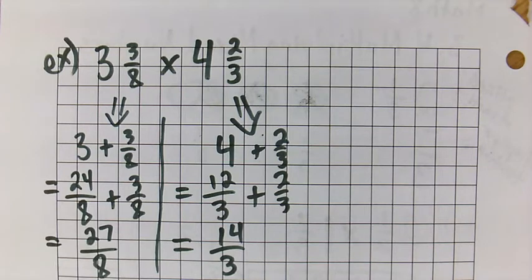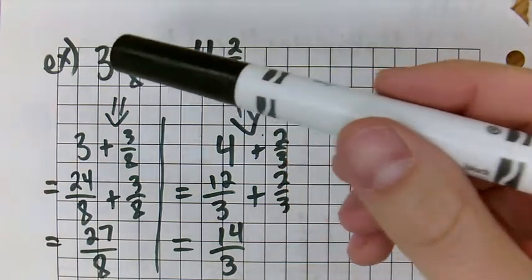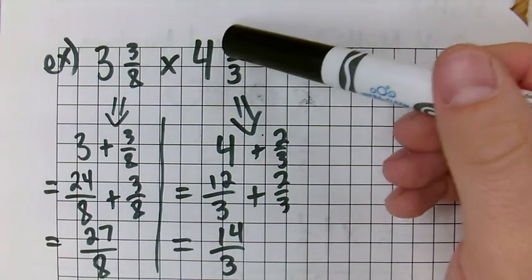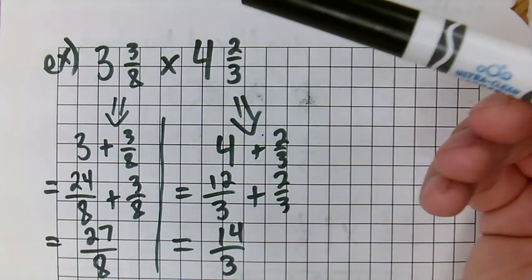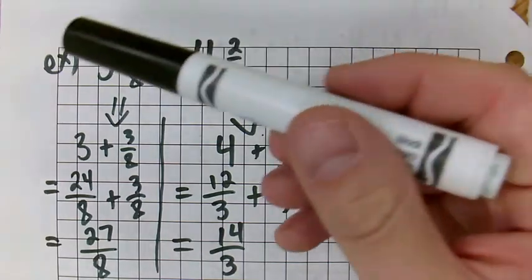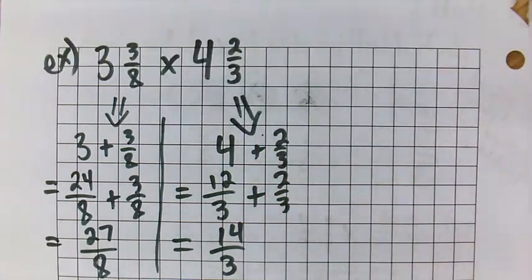Now, this is that same question. What if I were to estimate it? Well, looking here, 3 and 3 quarters is, let's say, 3. And 4 and 2 thirds is, let's say, 5. Let's round up to 5. This one will round down, this one will round up. 3 times 5 is 15.